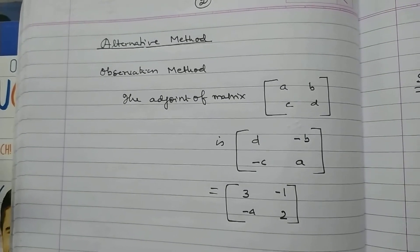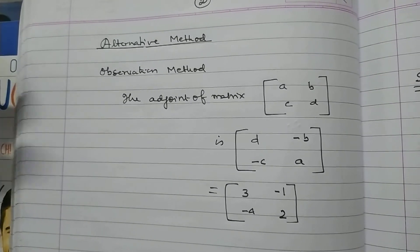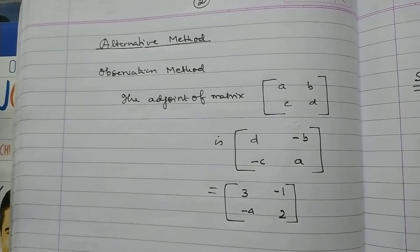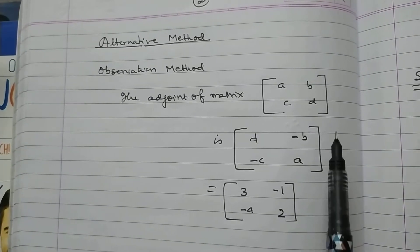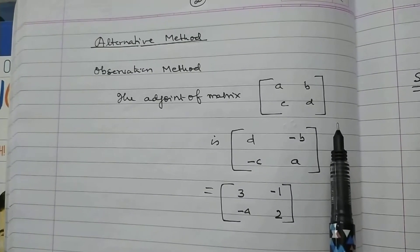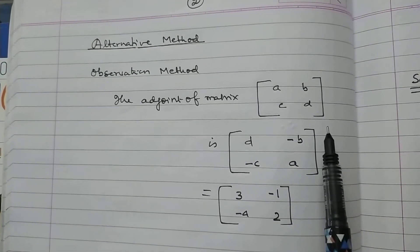Having weight is 2 marks. So, you keep in your mind. While solving the problem to find the adjoint of matrix, we must know the technique. I want to repeat it again.